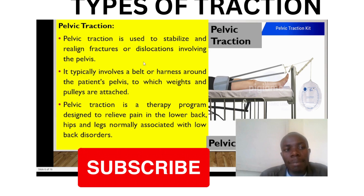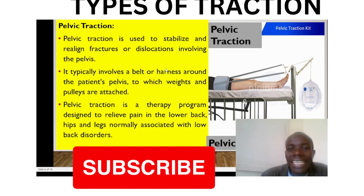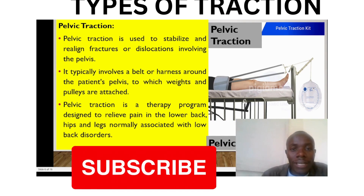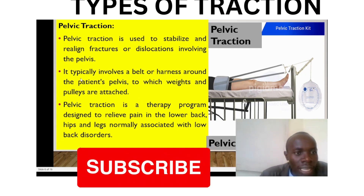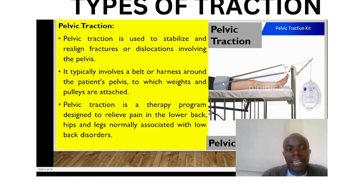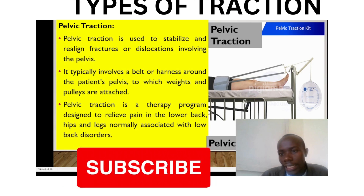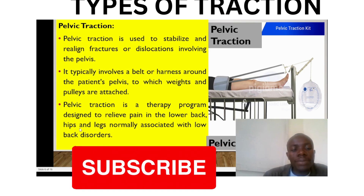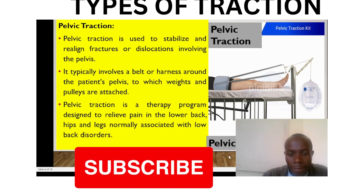Pelvic traction is used to stabilize and realign fractures and dislocations involving the pelvis — the bones involved being the pubis, ischium, and ilium. A link will pop up for the anatomy bone songs to help you remember the different types of bones. Pelvic traction involves belts or harnesses around the patient's pelvis to which weights are attached and pulled. It is a therapy designed to relieve pain in the lower back, hips, and legs, and is normally associated with lower back disorders.